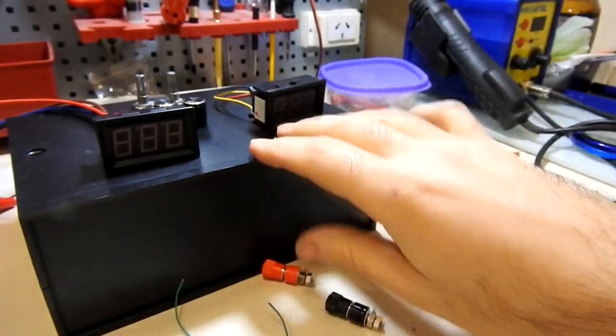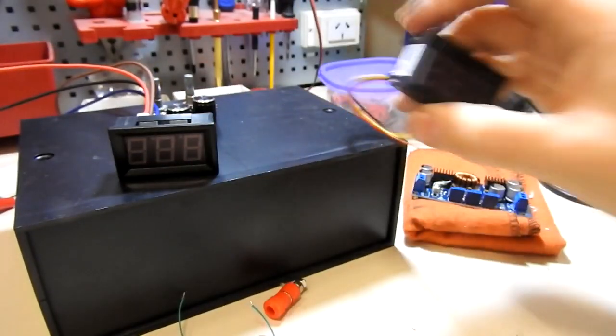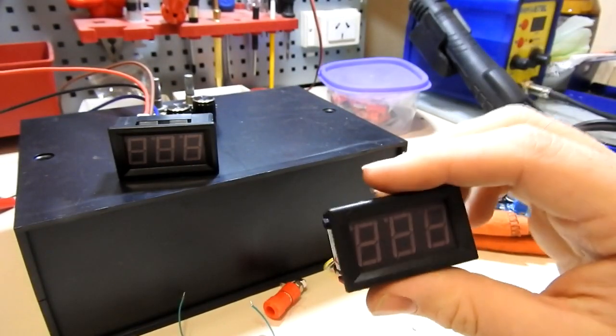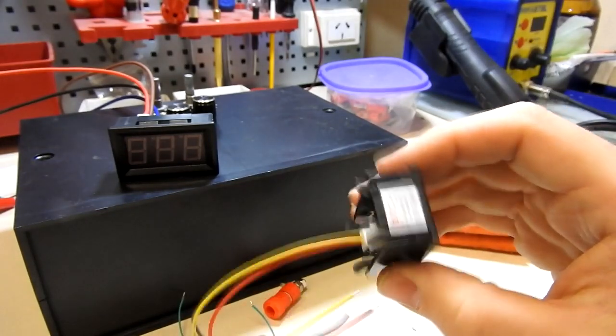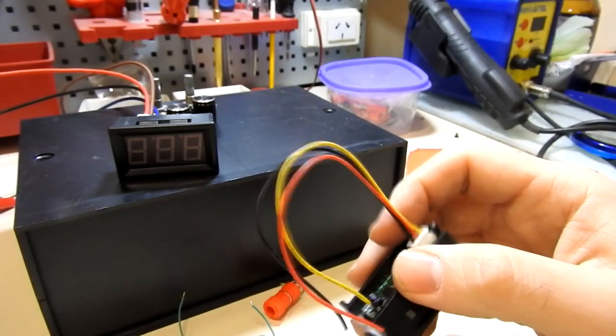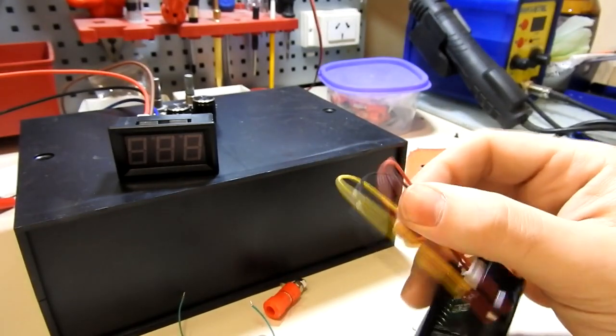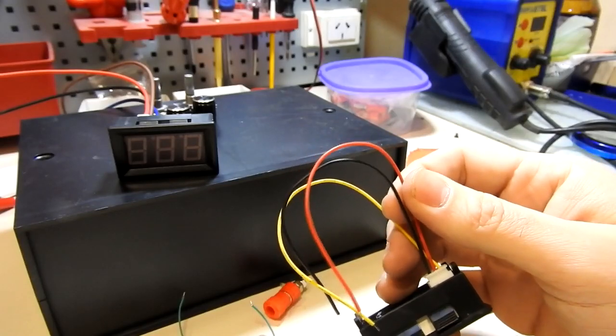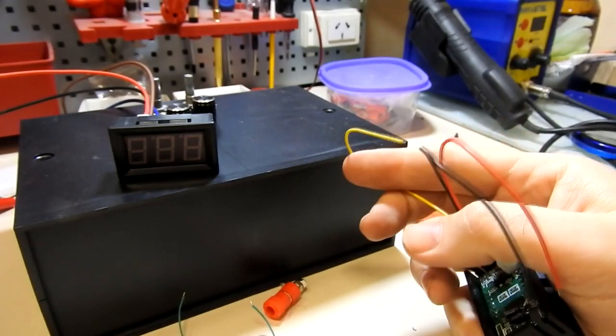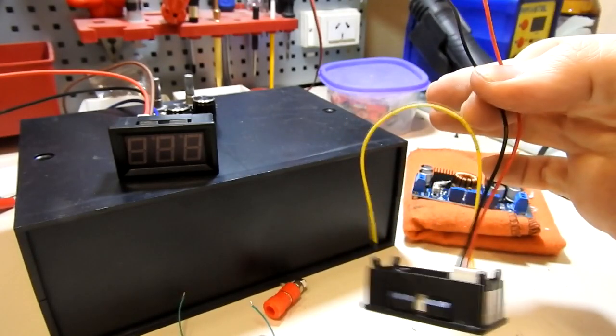Ya hablamos del case. Y por último, y no menos importante, son estos dos adminículos. Esto es un voltímetro digital. Nos marca el voltaje. Funciona con un conexionado de tres cables. Un ground común, que es el negro. Un rojo, que es el positivo de alimentación. Y un amarillo, que es el positivo de testeo. Nosotros alimentaríamos un voltaje acá.